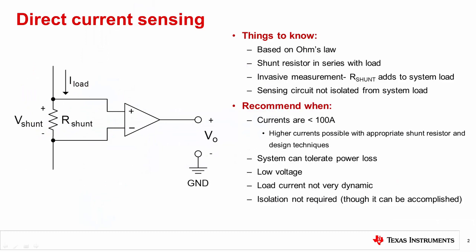In today's training I will introduce the basic concept of direct current sensing. This method is based on Ohm's law where load current generates a voltage across the sense element, typically a shunt resistor. This shunt voltage or sense voltage is measured to determine the current level.